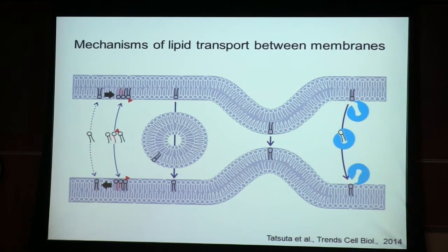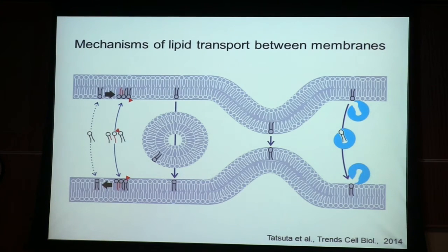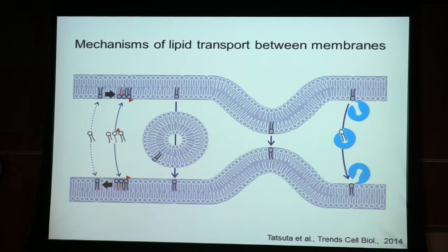However, mitochondria are not connected to the secretory pathway. There are some recent findings mainly from Heidi McBride's lab at McGill about mitochondria-derived vesicles, but they have not been linked to lipid trafficking so far. So it was really unclear up to a few years ago how mitochondria receive their lipids and how lipids are redistributed within mitochondria.